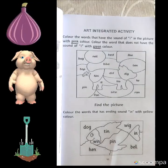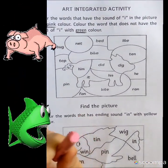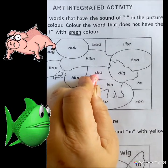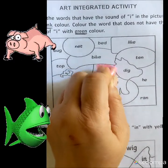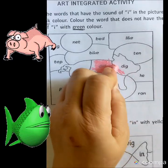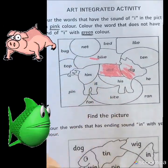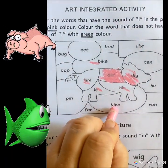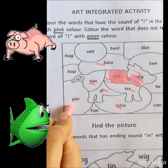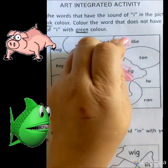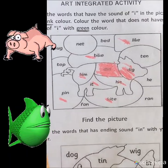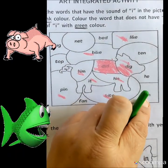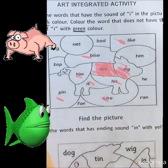Dekhiye, main sirf ek karke dikha rahi hoon, other work you will do yourself. Dekhiye, yaha pe I sound hai, so I will color this pink. Yaha pe bhi I hai - pink color. Main sirf dot put kar rahi hoon. Yeh I hai - pink color. I hay pink color, I hay pink color. Yaha pe dekhiye, I ki sound aa rahi hai - pink color. So, we have to do words with I sound as pink color, and other words as green color.